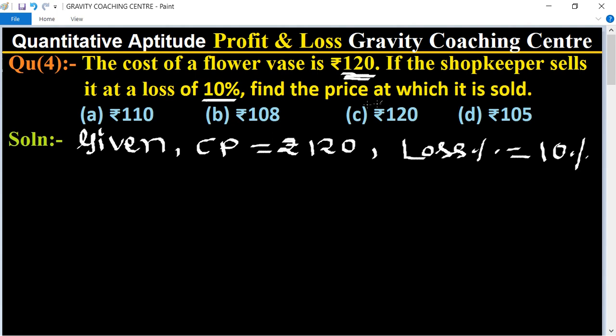Find the selling price of the flower vase. We know that the formula of loss equals CP into loss percent. So CP is 120 into loss percent equal to 10 upon 100. Zeros cancel, so Rs. 12 is the loss.